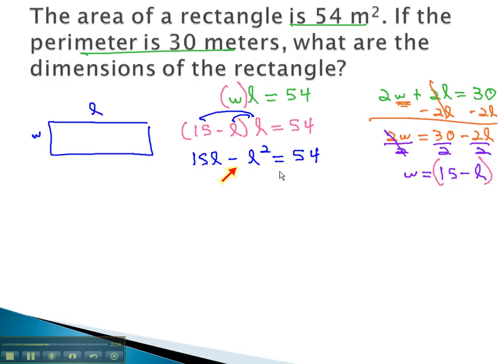We don't like the l² to be negative, so let's move everything to the right. We'll subtract 15l and add l². Putting things in order with the l² first, we have l² - 15l + 54 = 0.